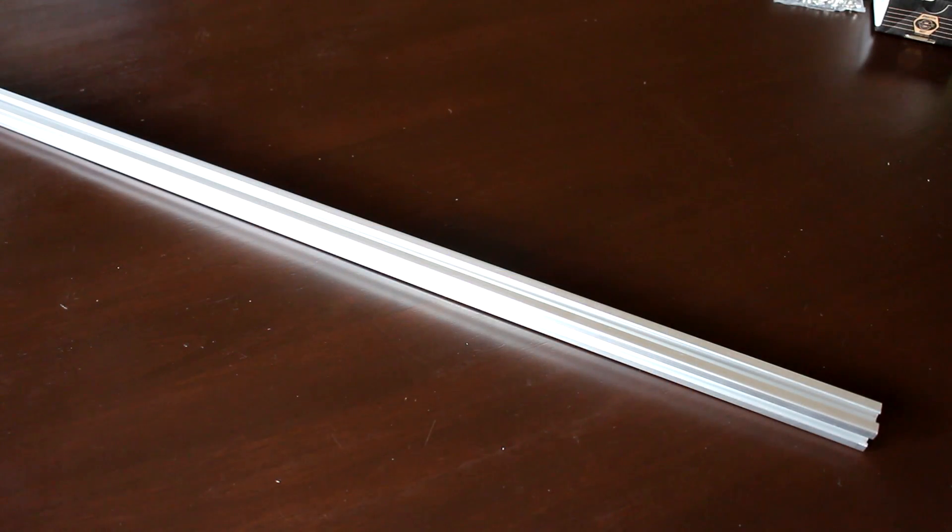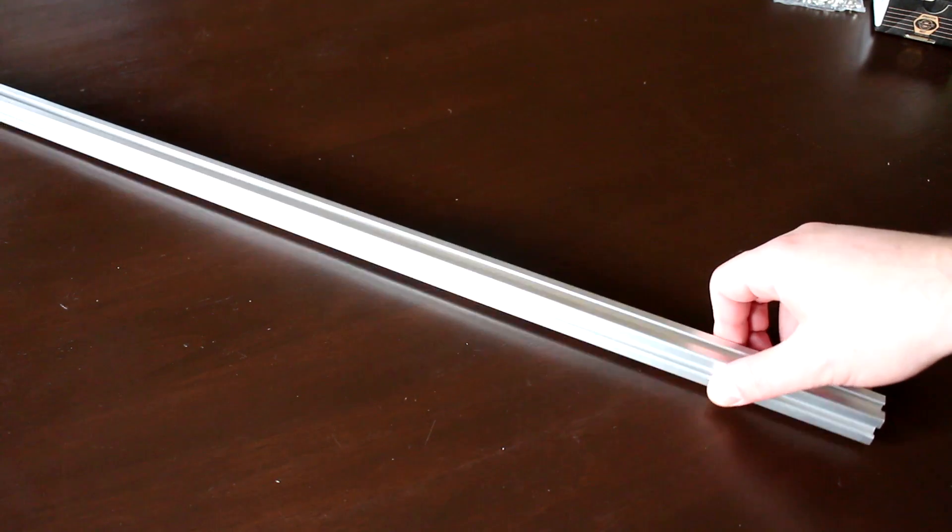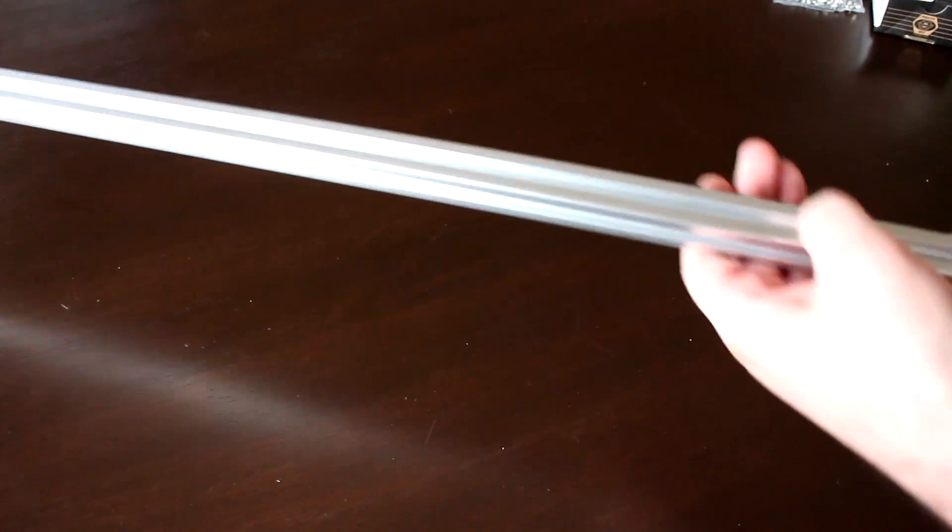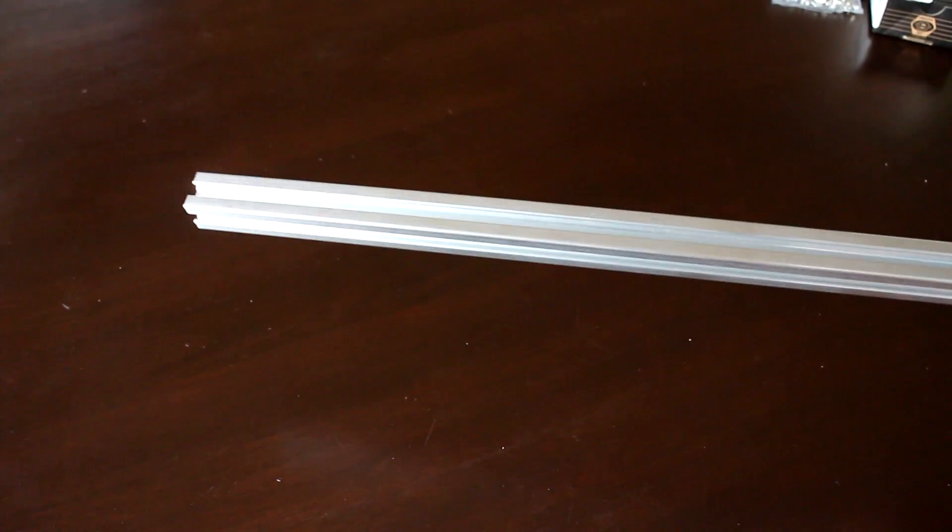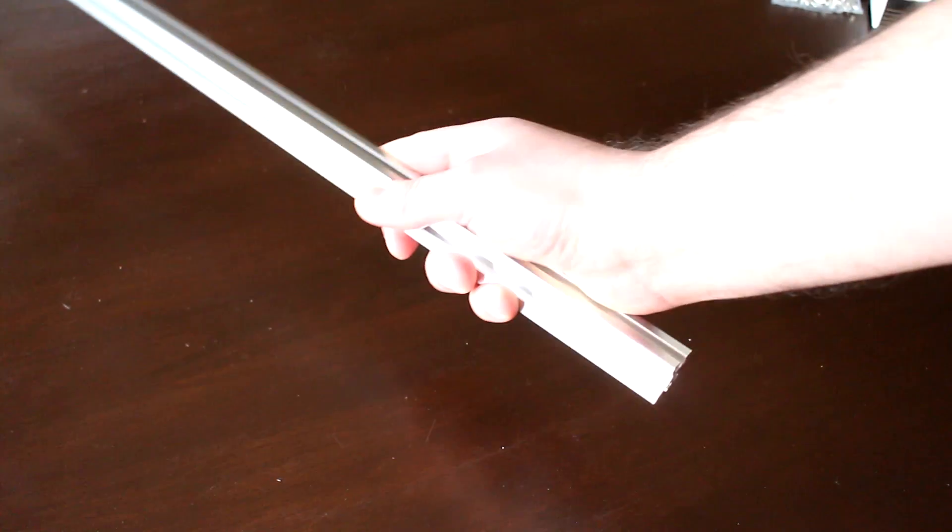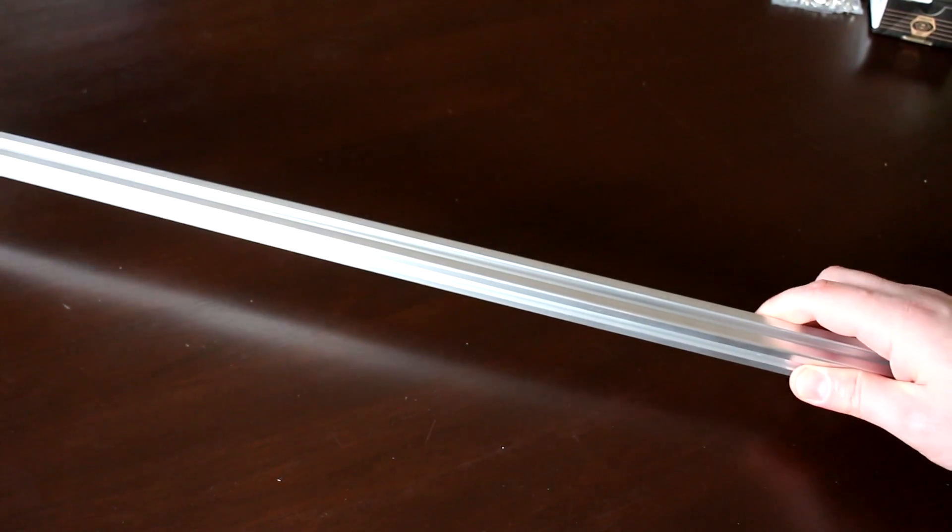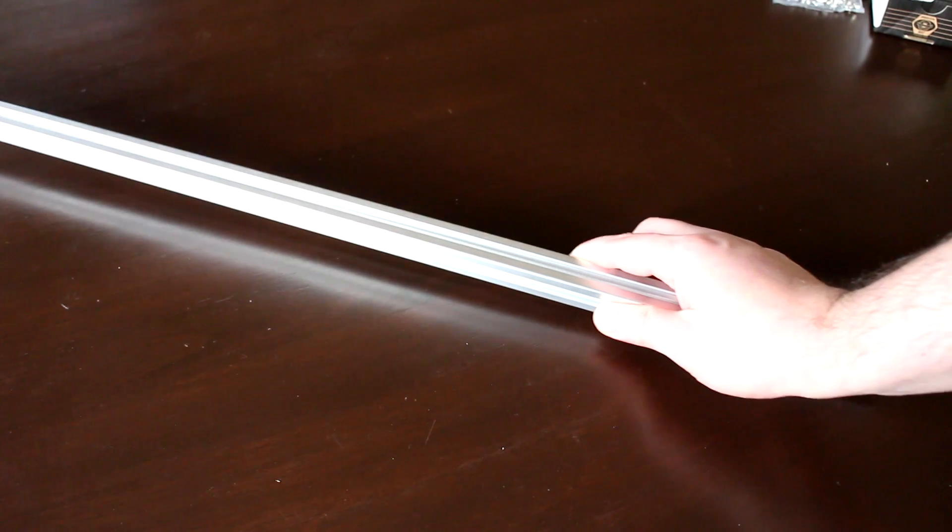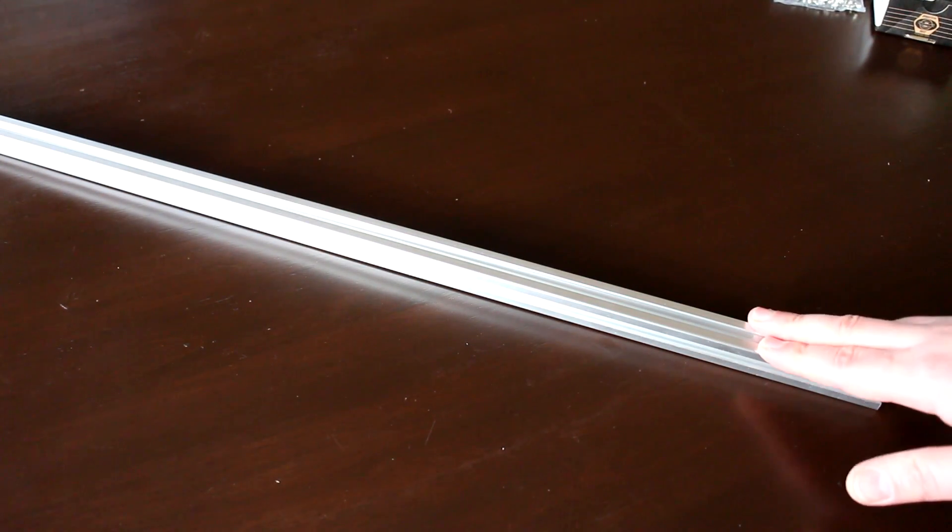To begin, I've had to purchase the 20mm T-slot aluminum extrusion, and here is a one meter length which is a general length that you buy these in. You can get these pre-cut to size from the vendor, but I've chosen to cut these myself to save some money.